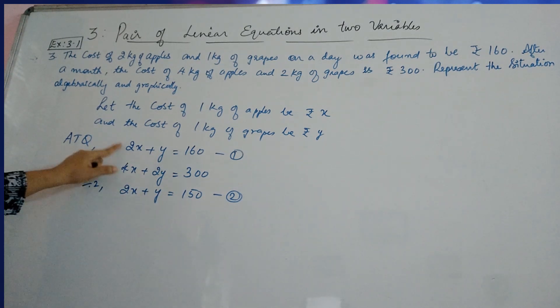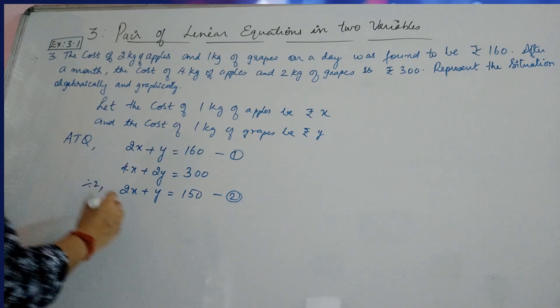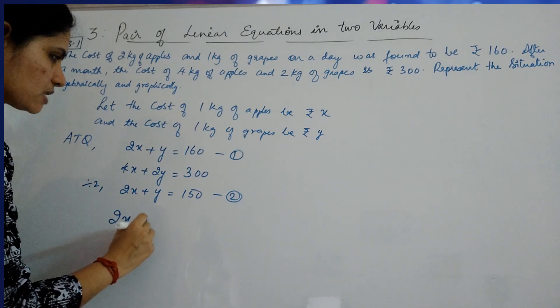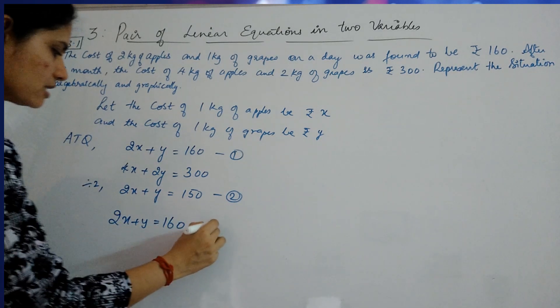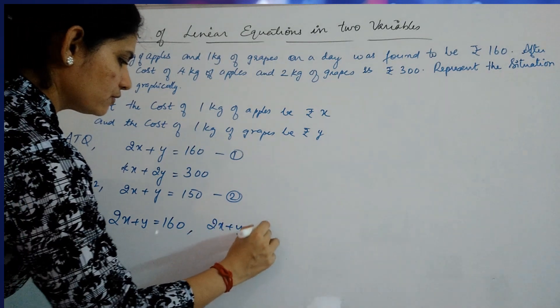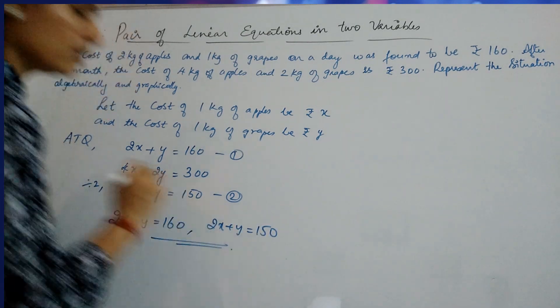That is why we are reducing it. So, these are the two equations. So, algebraic representation means 2x plus Y is equal to 160 and 2x plus Y is equal to 150. This is your algebraic representation.